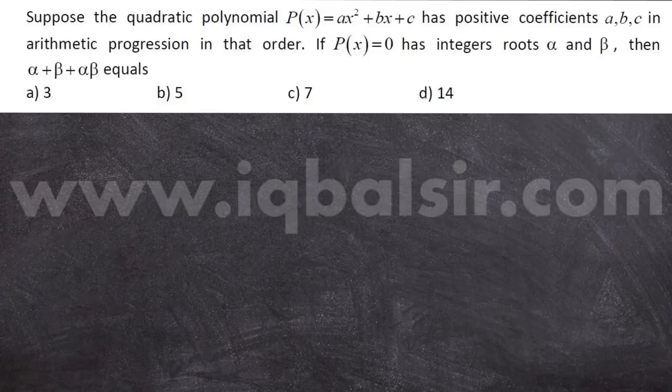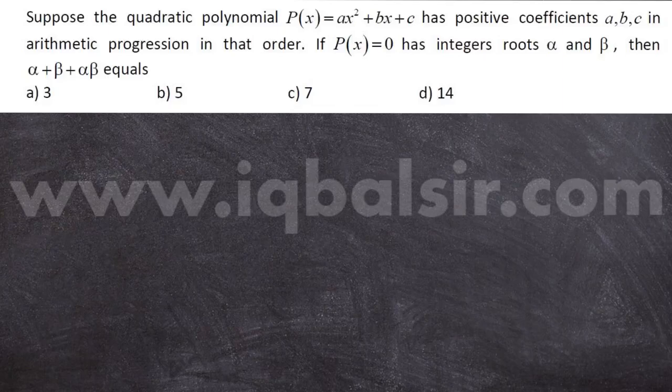Suppose the quadratic polynomial p(x) = ax² + bx + c has positive coefficients a, b, c in arithmetic progression in that order. If p(x) = 0 has integer roots alpha and beta, then find alpha plus beta plus alpha times beta.